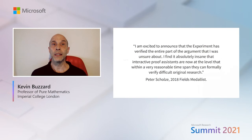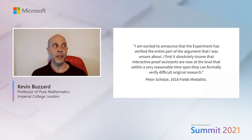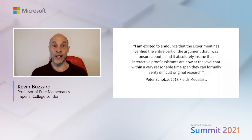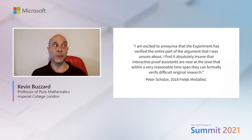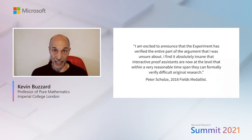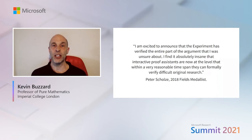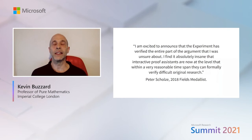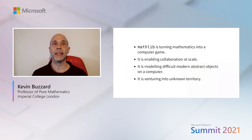And this is his response. As part of a blog post, he said: I'm excited to announce that the experiment has verified the entire part of the argument that I was unsure about. I find it absolutely insane that interactive proof systems are now at a level where within a very reasonable time span, they can formally verify original research. This was the Lean theorem prover and its maths library being used to actually help a modern mathematician with an interesting problem — they weren't convinced that the community were carefully reading their work.